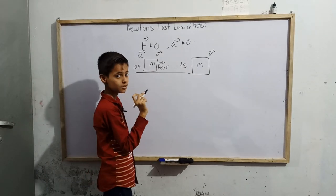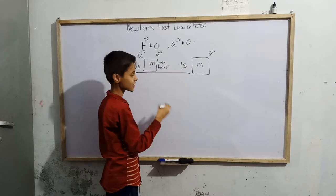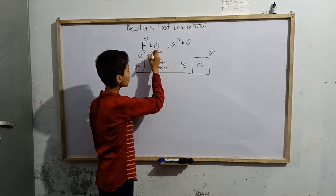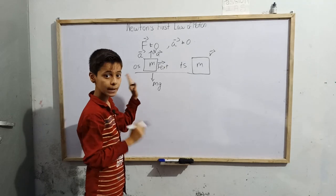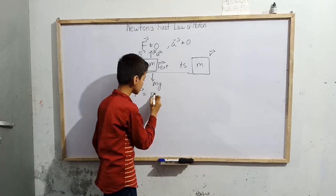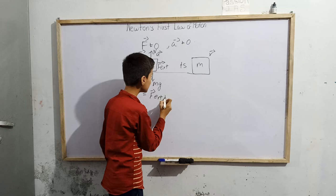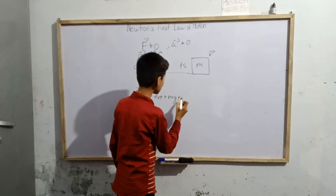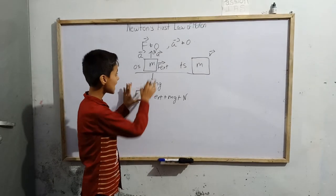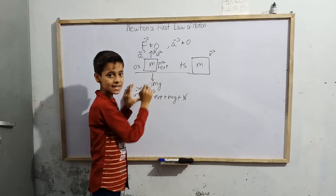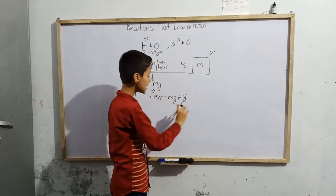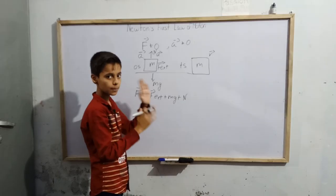Now we find the sum of all forces. F external is acting horizontally. Downward is the weight of the block, that is Mg. In the upward direction we have the normal contact force denoted by N, applied perpendicularly. So the total force F equals F external plus Mg plus N, which is the sum of all forces acting on this object of mass M.